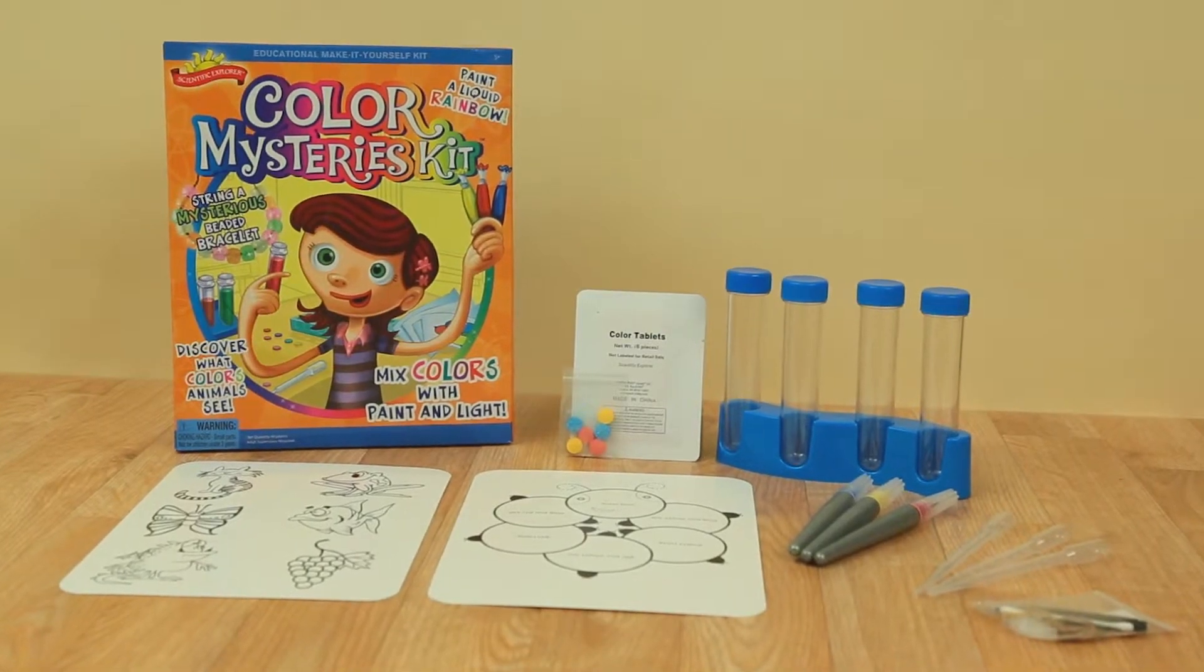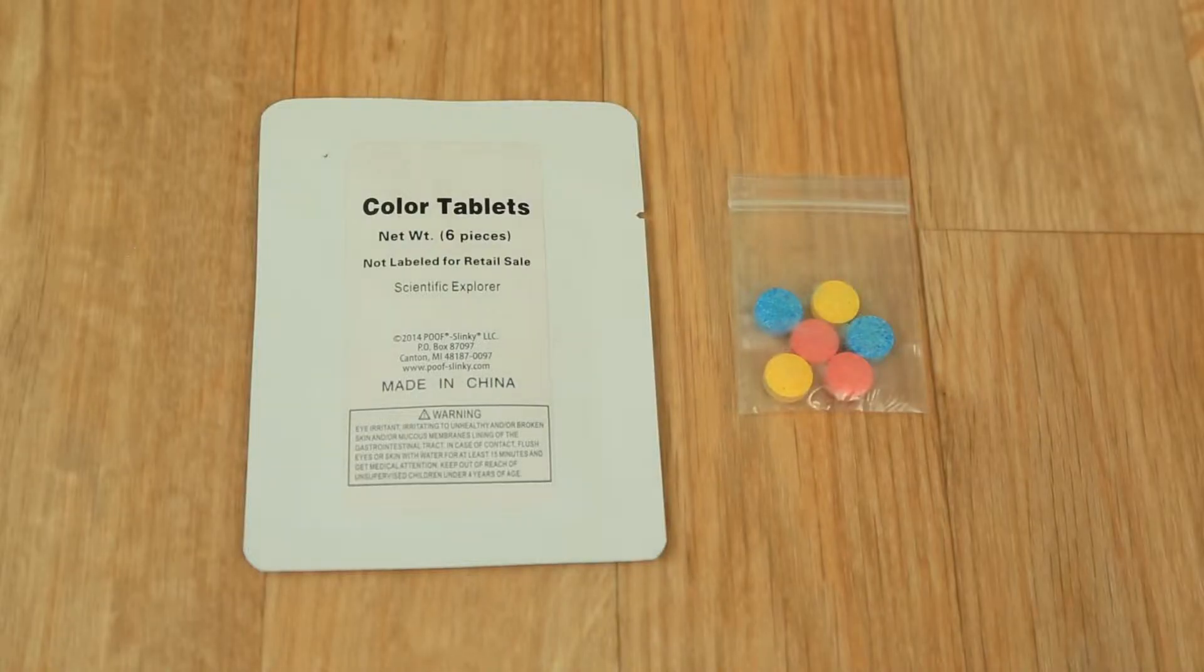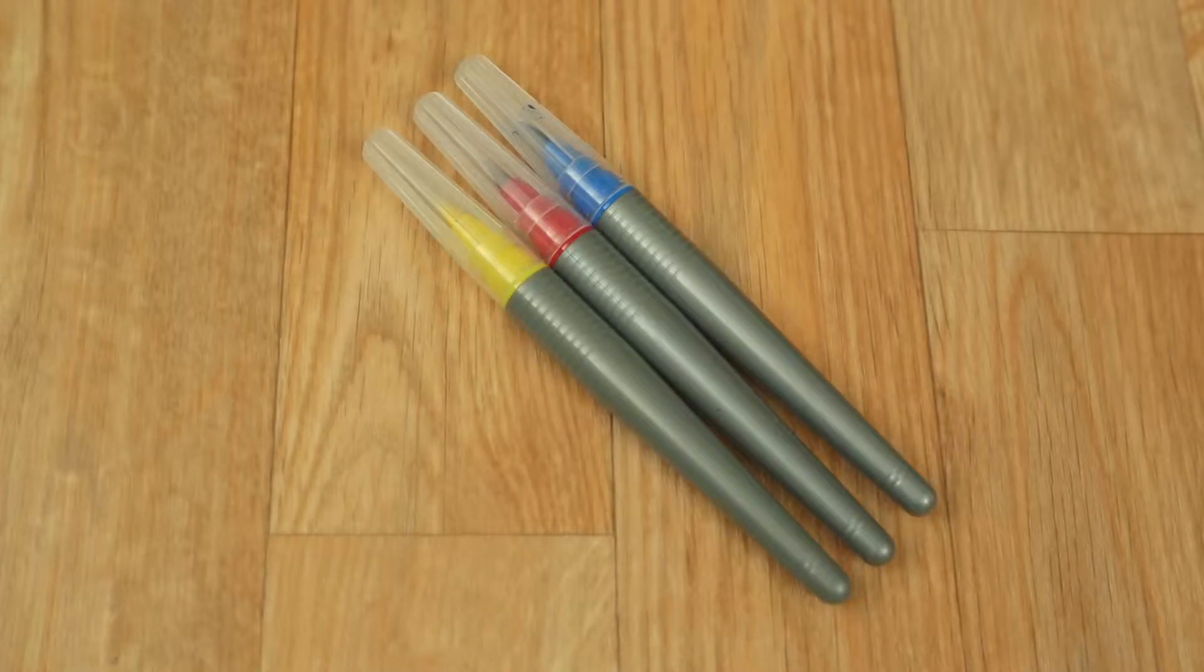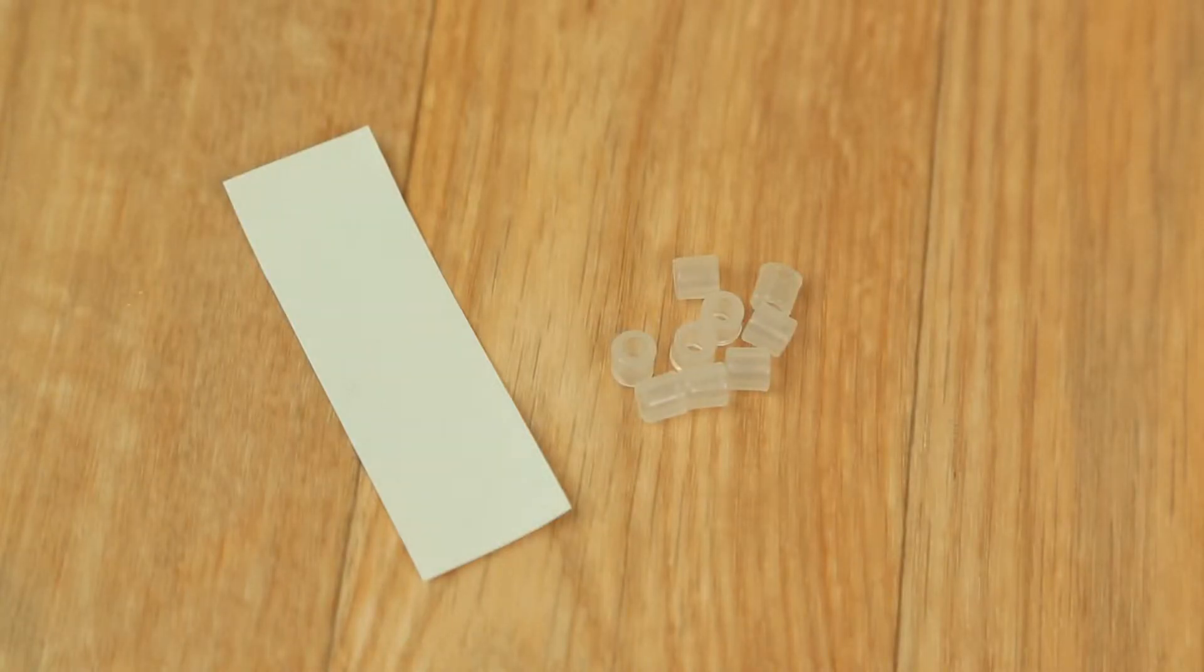Each Color Mysteries Kit comes complete with test tubes, colored tablets for water, pipettes, a caterpillar color wheel, paintbrush pens, solar beads, filter paper, and more.